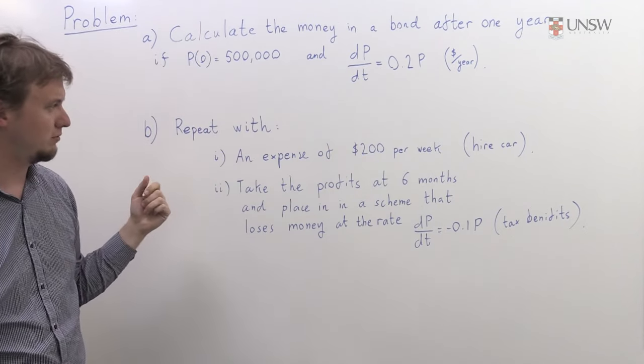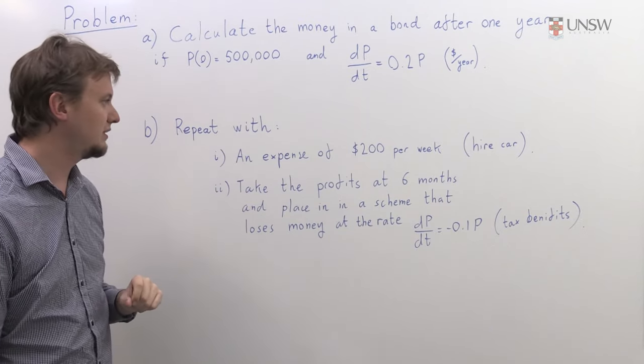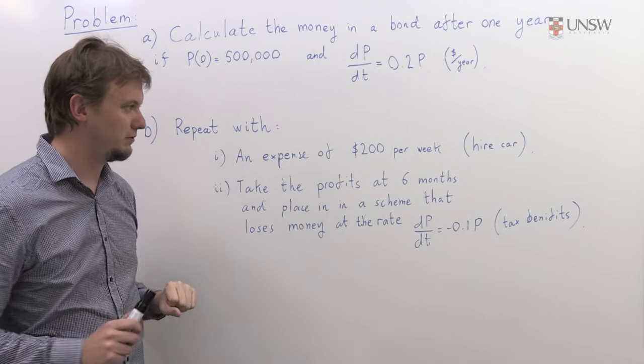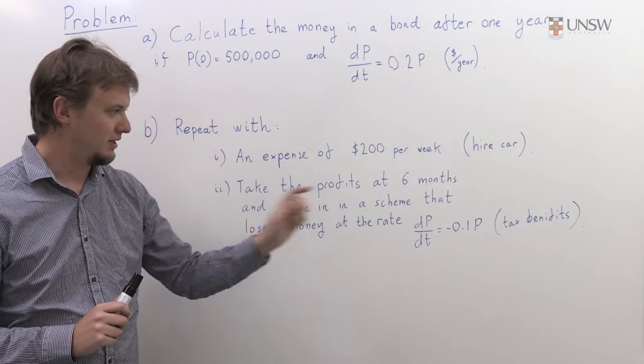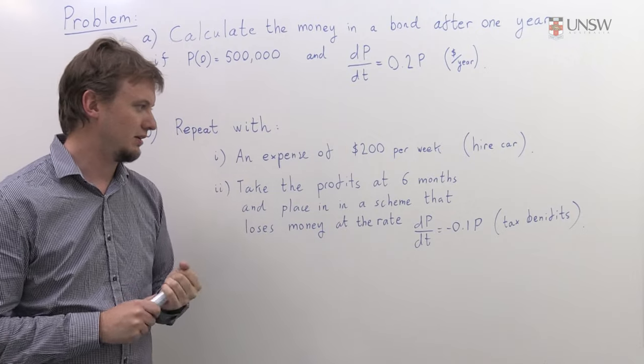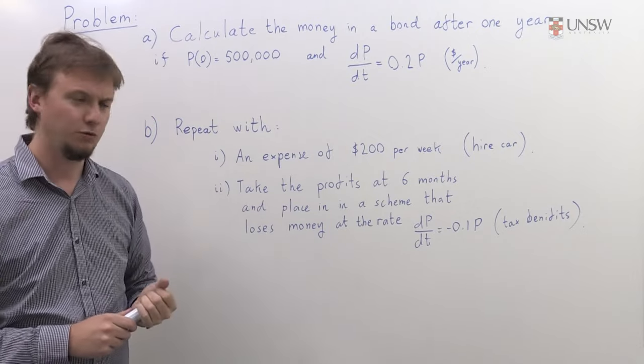In the next part, we're told to repeat this, but now we're going to add an expense of $200 per week. Then we're also going to take all the profits at the six-month point and put it into this other scheme, which is actually losing money at about 10% per year. So let's rub this out and do the first part.